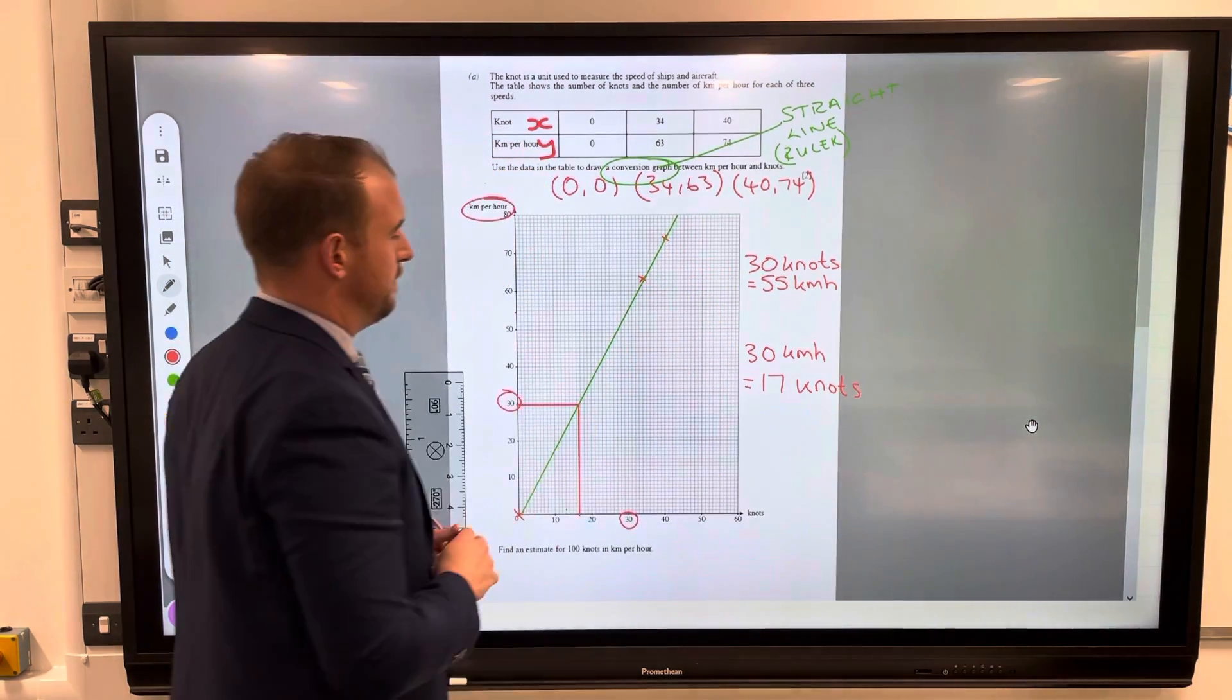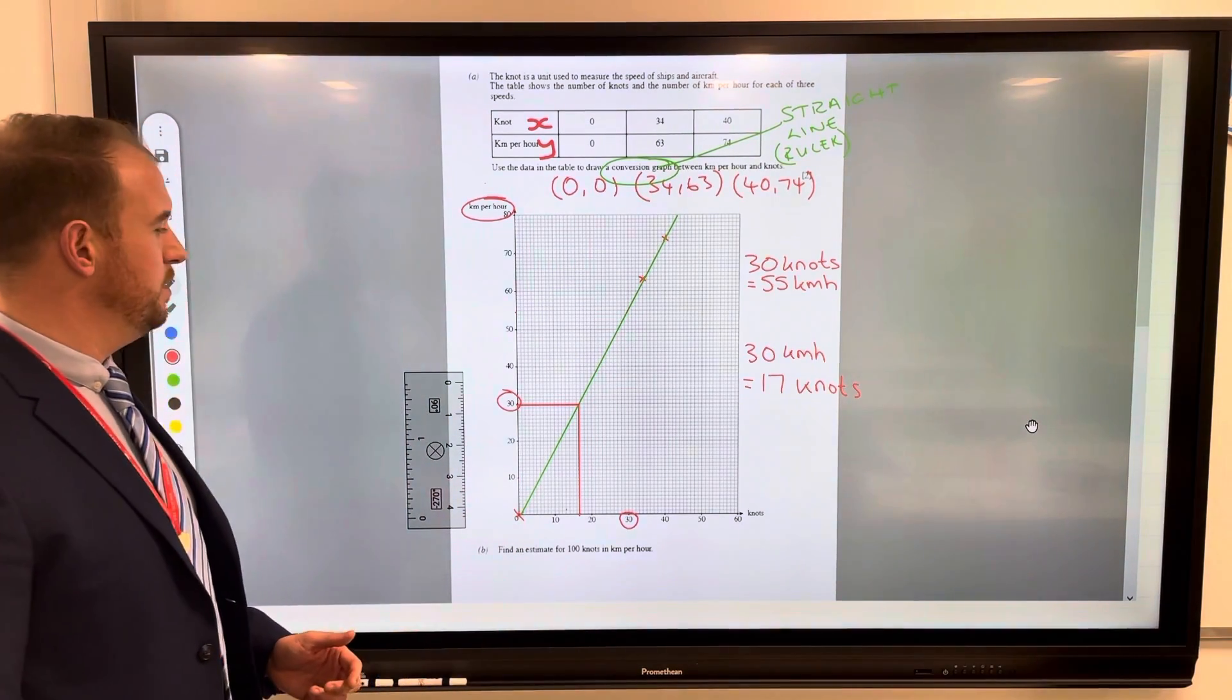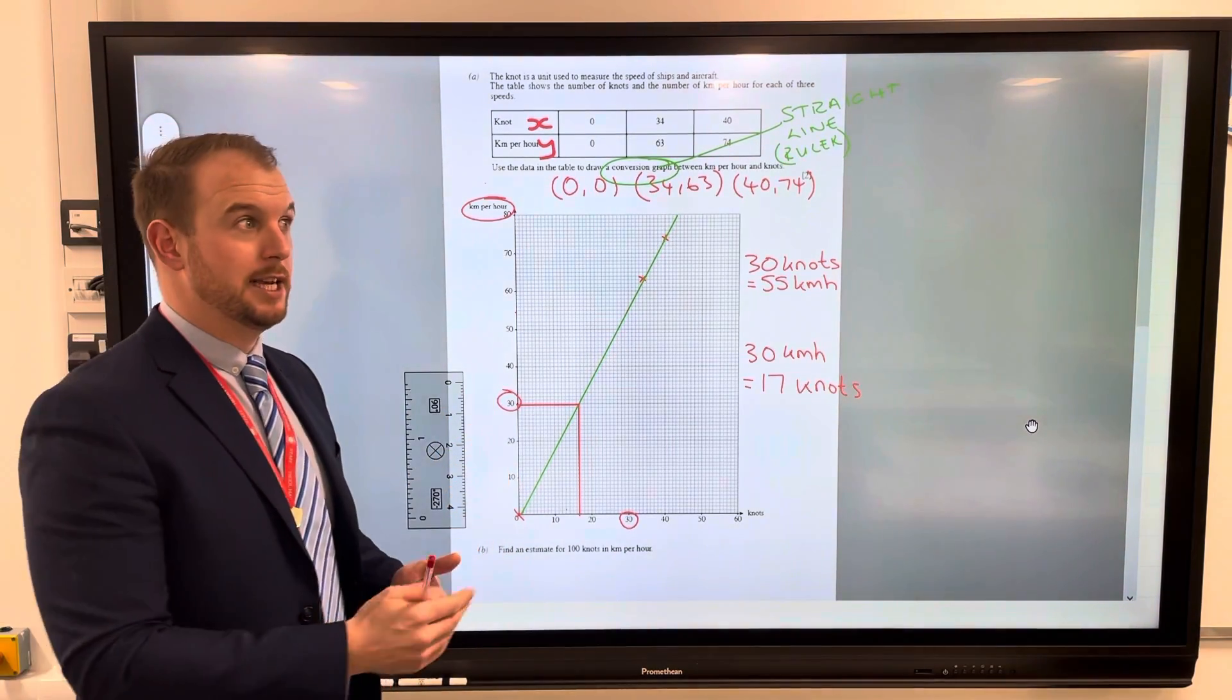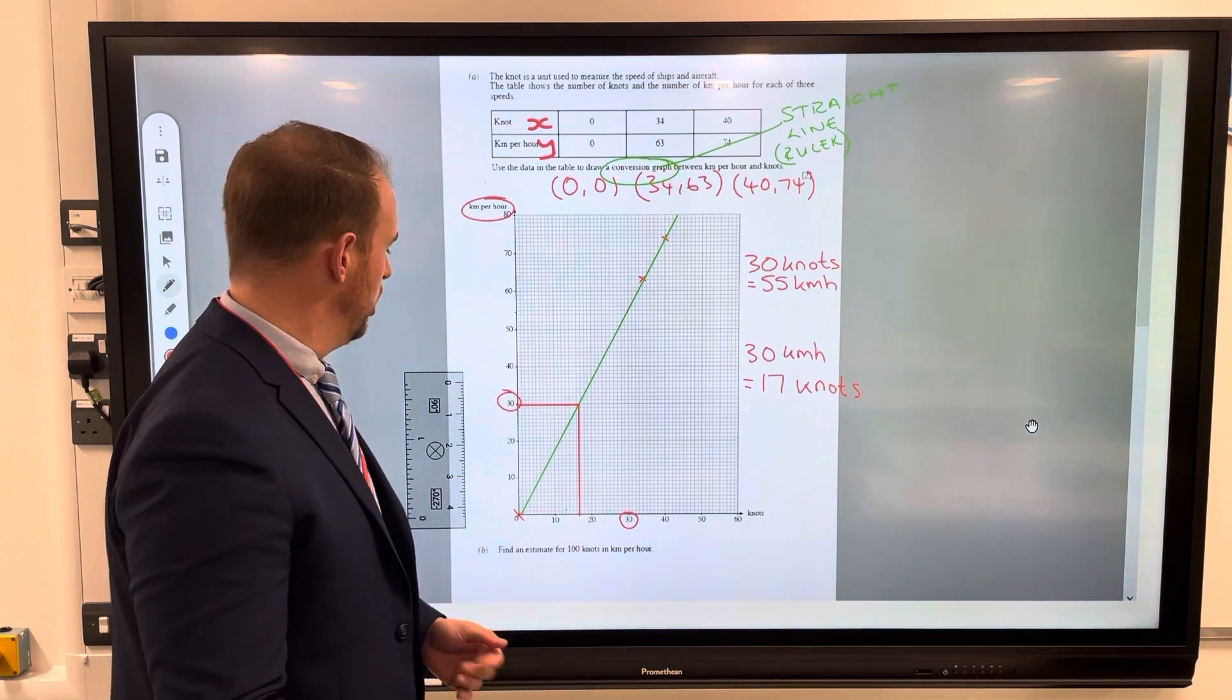Now 50 would be a nice easy one, but we haven't got a value for 50 because we could work out 50 and then just double it. Well how about then using 20 and then times it by five, or finding 25 and times it by four.